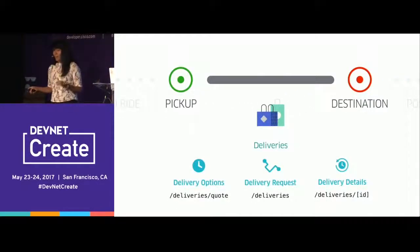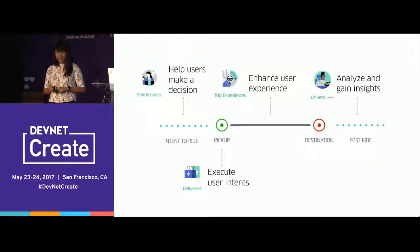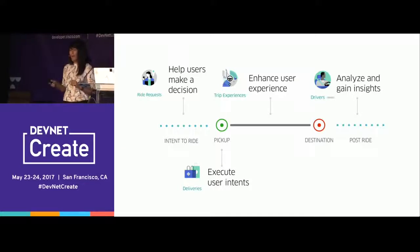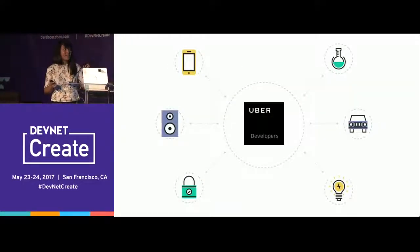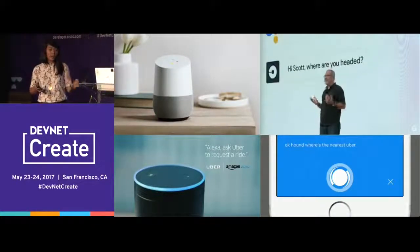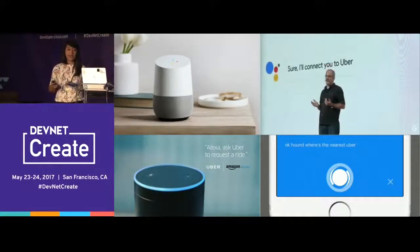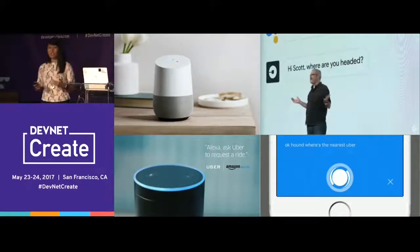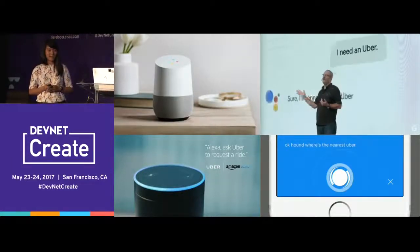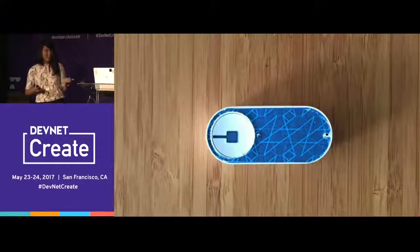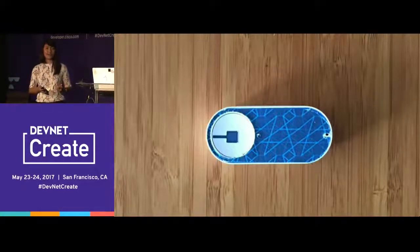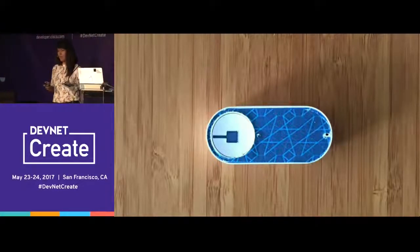Let's not forget Uber also delivers things from point A to point B with the deliveries API. The platform enables all kinds of interfaces to execute these functions. Some of the most popular conversational agents already use the ride request API to execute on user intents — these devices help users make a decision and then actually request a ride with no taps required. You can even build an AWS IoT button that with one push requests a ride for you.